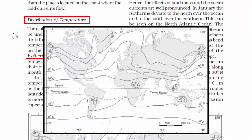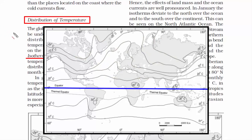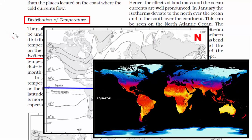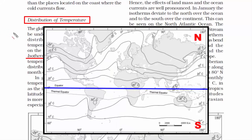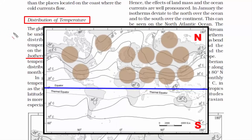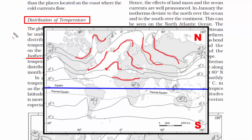Now let's understand the global distribution of temperature — why isotherms shift north and south from season to season. Above the equator is the northern hemisphere and below is the southern hemisphere. As we go away from the equator towards the poles, temperature decreases. When you look at the world map, there is more land surface area in the northern hemisphere compared to the southern hemisphere. The isotherms generally run parallel to the latitude, but there is a deviation — a change in the shape of isotherms — especially in the months of January and July.